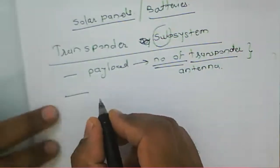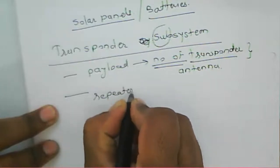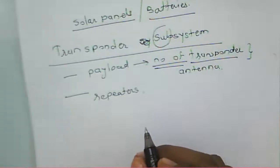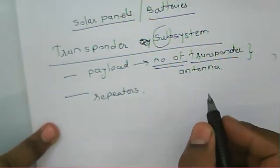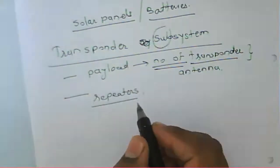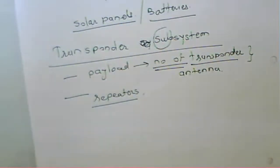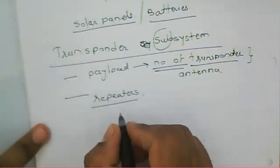Generally, a transponder acts as a repeater. It receives the signal from the earth station and transmits it back. Whatever signals it receives from the earth station, it acts like a repeater — just propagating the signal level it receives.